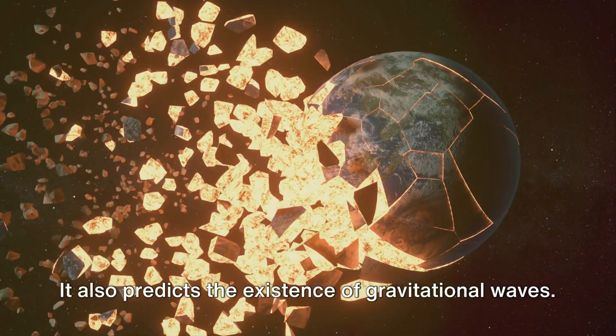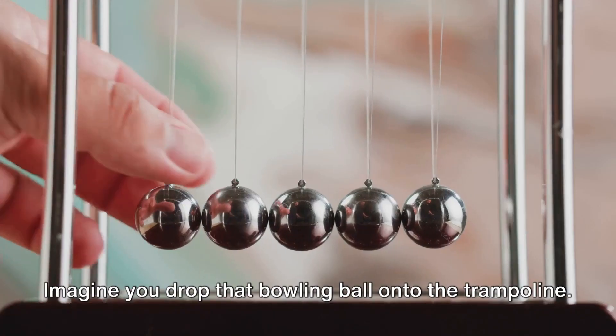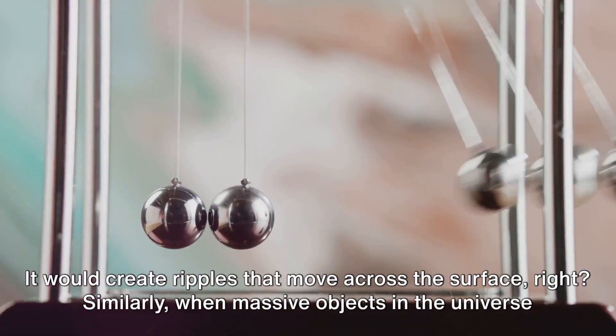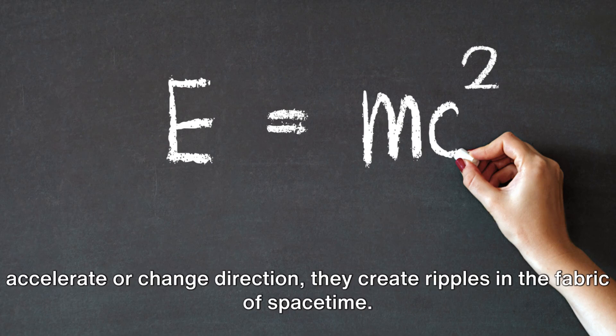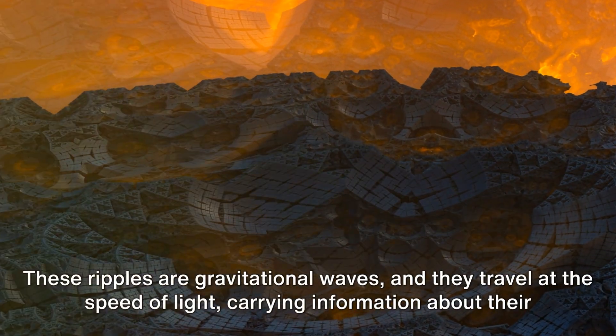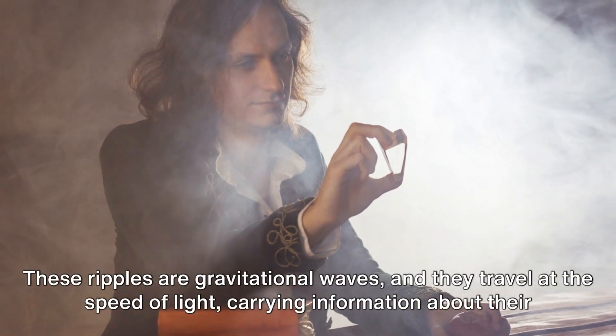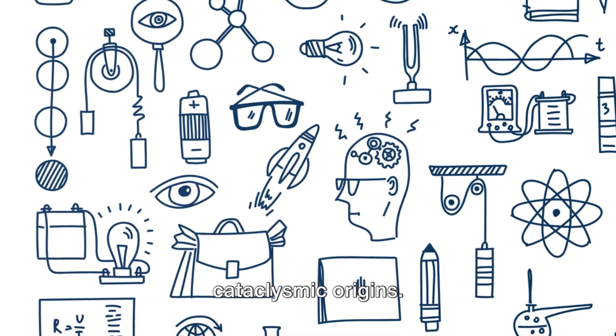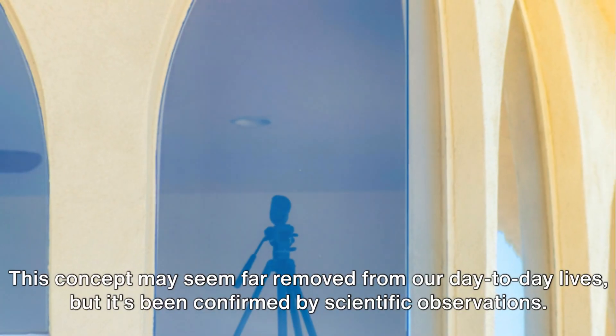The General Theory of Relativity doesn't stop there. It also predicts the existence of gravitational waves. Imagine you drop that bowling ball onto the trampoline. It would create ripples that move across the surface, right? Similarly, when massive objects in the universe accelerate or change direction, they create ripples in the fabric of space-time. These ripples are gravitational waves, and they travel at the speed of light.